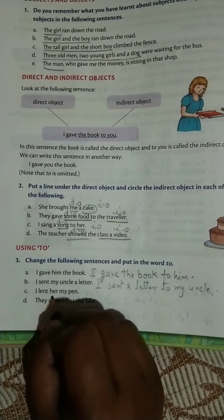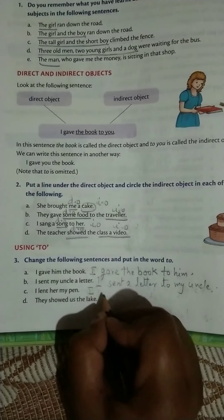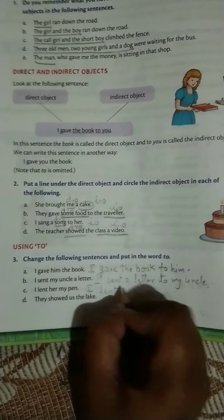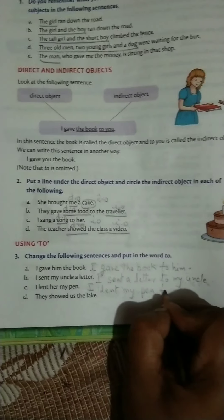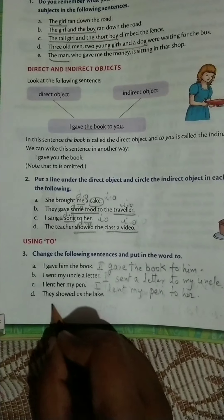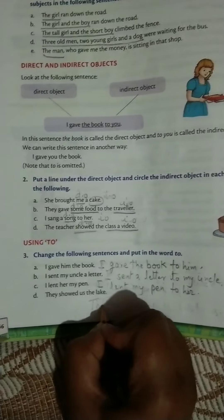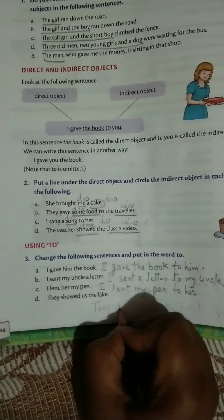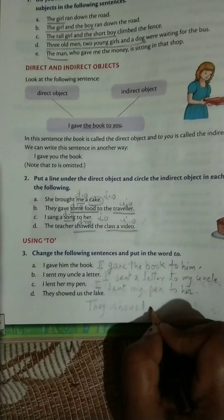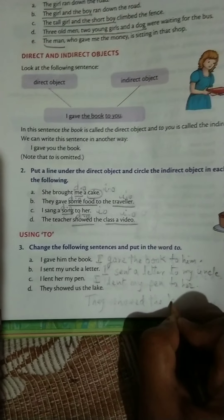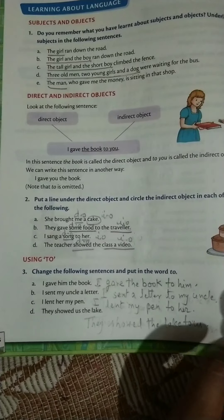I lent her my pen - I lent my pen to her. And the last one: they showed us the lake - they showed the lake to us. You can finish it like this.